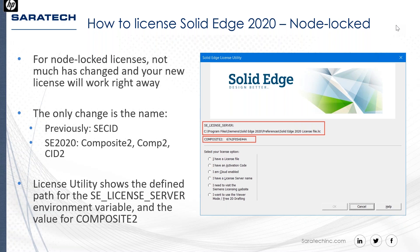There are six options for choosing your license. First: 'I have a license file' — for node lock licenses, browse to it locally. Second: 'I have an activation code' — for subscriptions. Third: cloud-enabled, where you type in your email to sign in and pull your license. Fourth: the floating option if you have a license server. Fifth: visit the Siemens licensing website to download a new or emergency license. Sixth: a free viewer mode for viewing 2D or 3D files without pulling a full license.